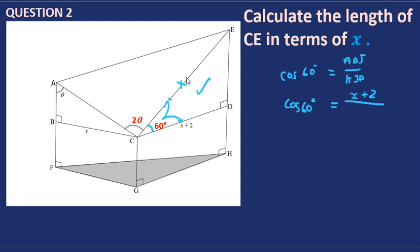The adjacent side is CD, which is x plus 2, and the hypotenuse is CE. To simplify, we swap cosine of 60 and CE, giving us CE equals x plus 2 divided by cosine of 60 degrees.